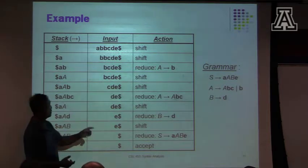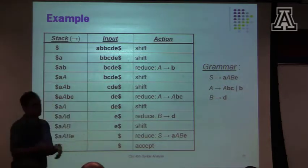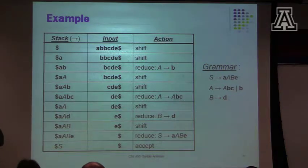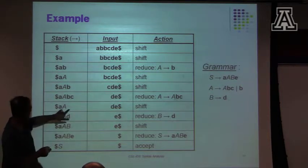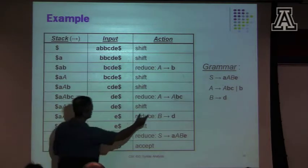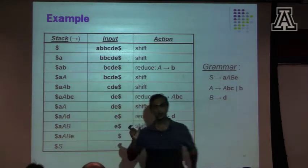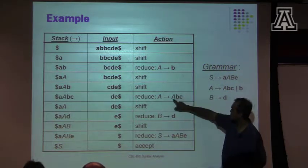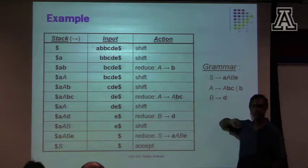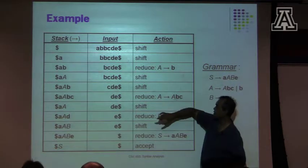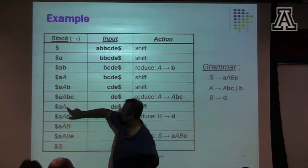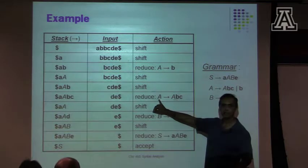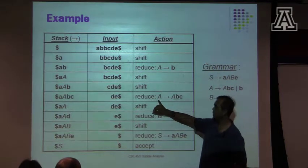What a reduce action does — when I do a reduce, the table doesn't just say reduce, because if you just said reduce, it's like, okay, reduce with what? So what the table specifies is not just reduce, but reduce with which production. In this case, I reduce with this production. Simply from the fact that I'm reducing with this production, I know I'm going to be popping these three symbols off the stack, and pushing this guy.